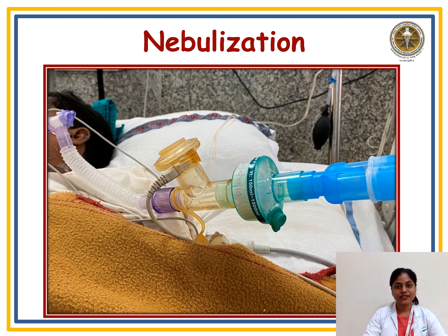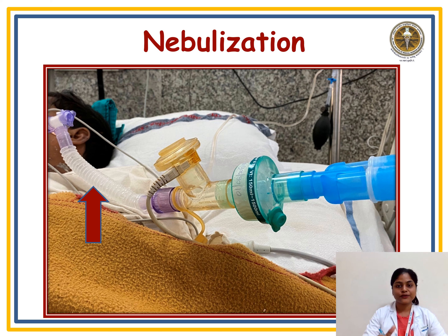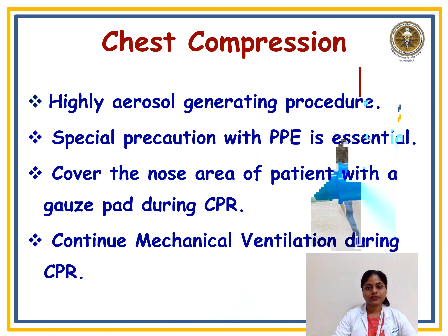The picture shows nebulization delivery in a closed circuit system. First, clamp the catheter mount at its middle. Open the fogger and install the desired amount of nebulizing solution, then close the port of the fogger. Switch on the nebulization and release the clamp — the patient will now receive nebulization in the closed circuit system.